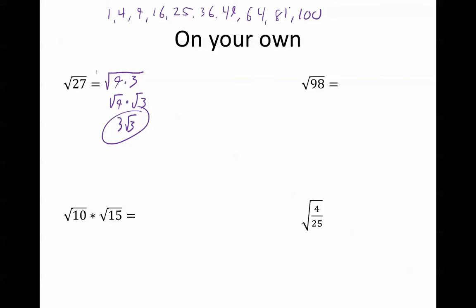98, let's see. 81 is not divisible, 64 isn't divisible, 49 is divisible. So that's the square root of 49 times 2, which is the square root of 49 times the square root of 2, which is 7 root 2.